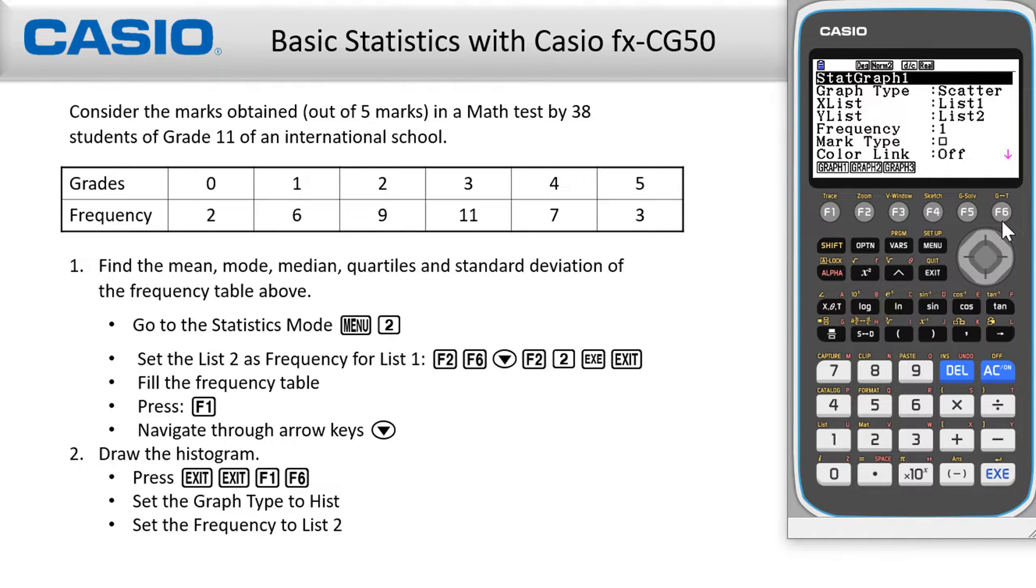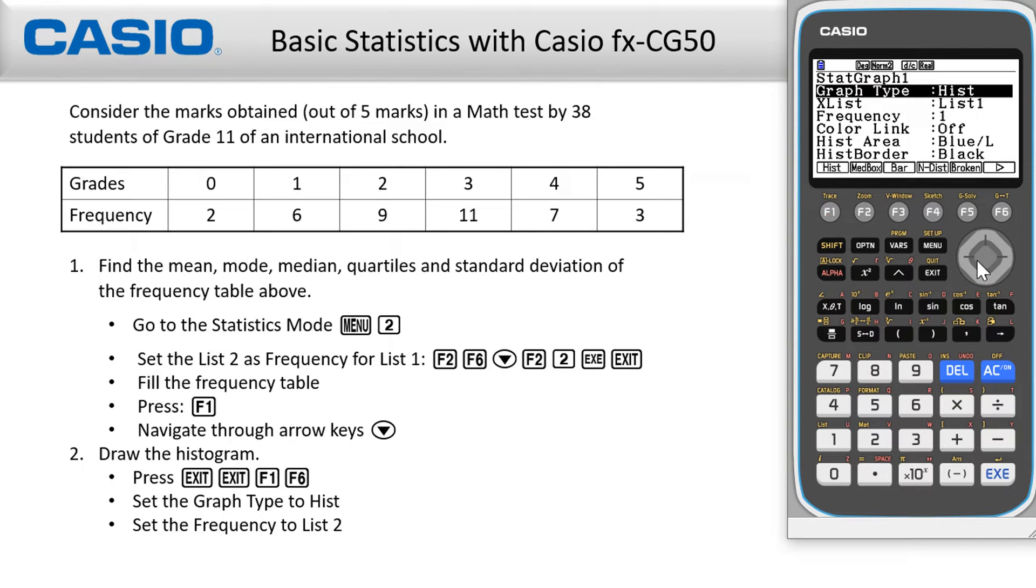Then, navigate to other options by pressing F6 again. Choose F1 for histogram, and then change the frequency to list two as done in part one.